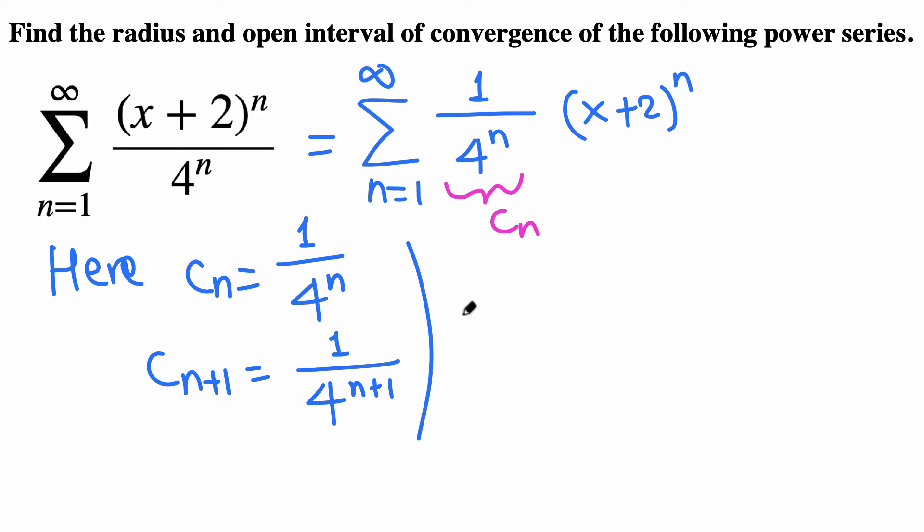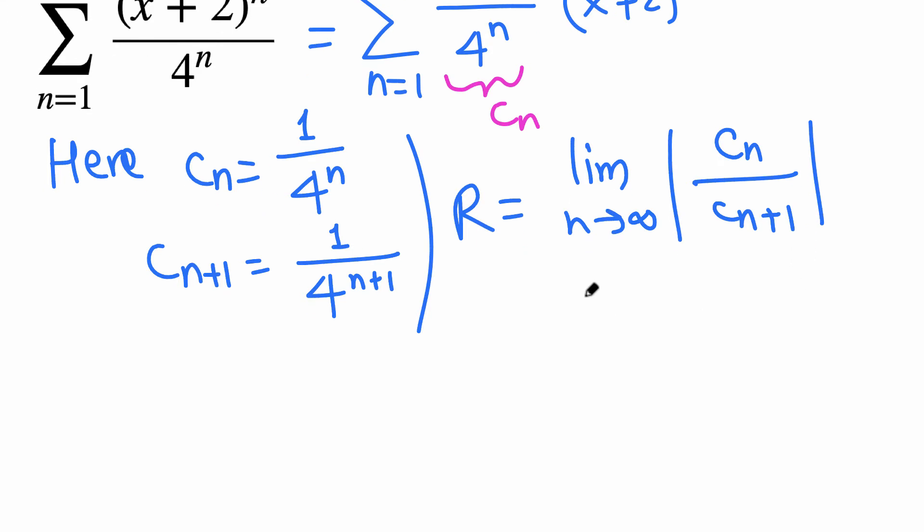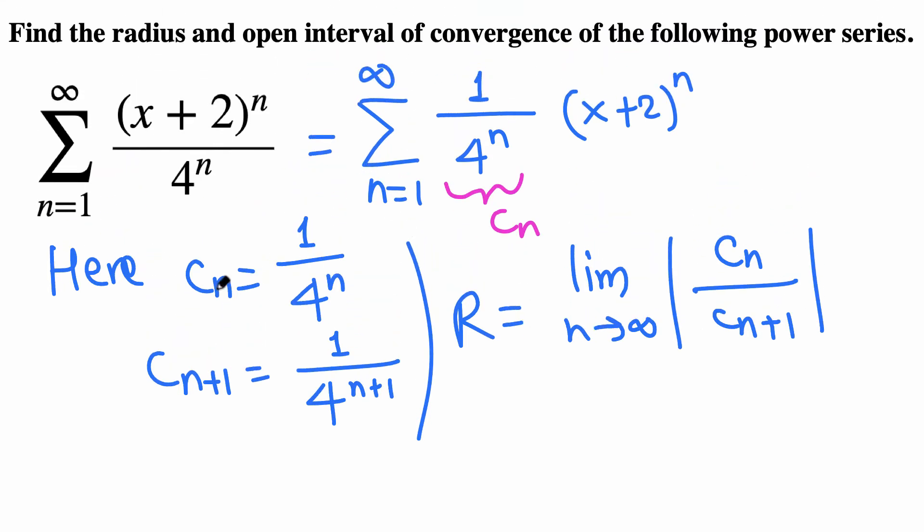...is given by limit as n goes to infinity of the absolute value of cn over cn+1. In our case, cn is all positive, so we don't have to worry about absolute value.